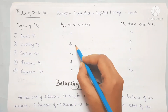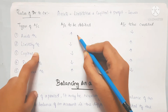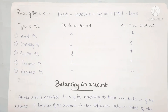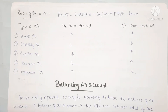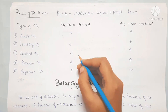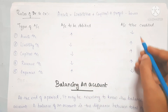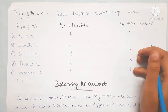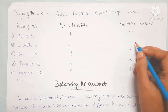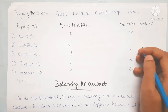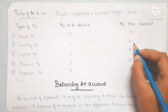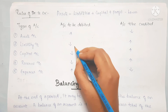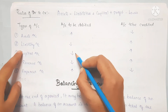Next is Liabilities. The rule for liabilities is opposite to assets. If liabilities increase, we credit; if liabilities decrease, we debit. For example, if we pay a loan amount, the loan will be reduced - so we debit. If the loan amount increases, we credit.